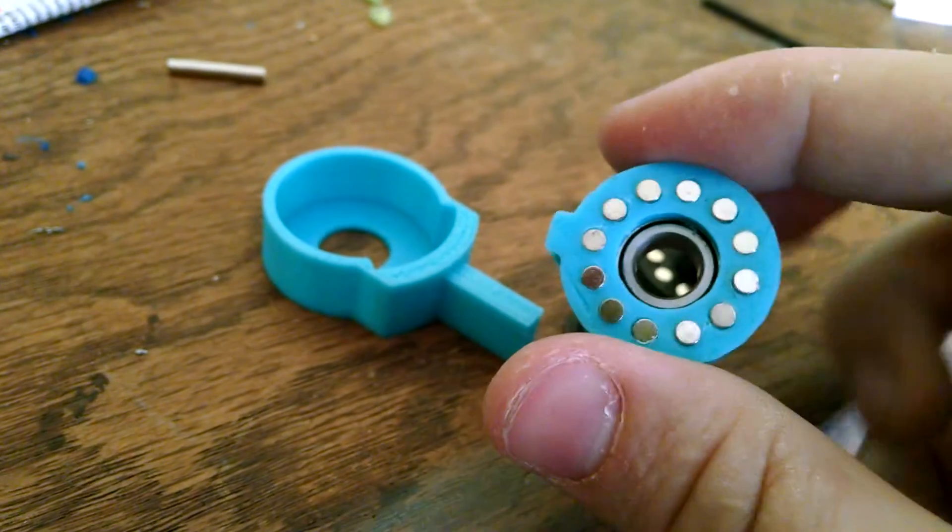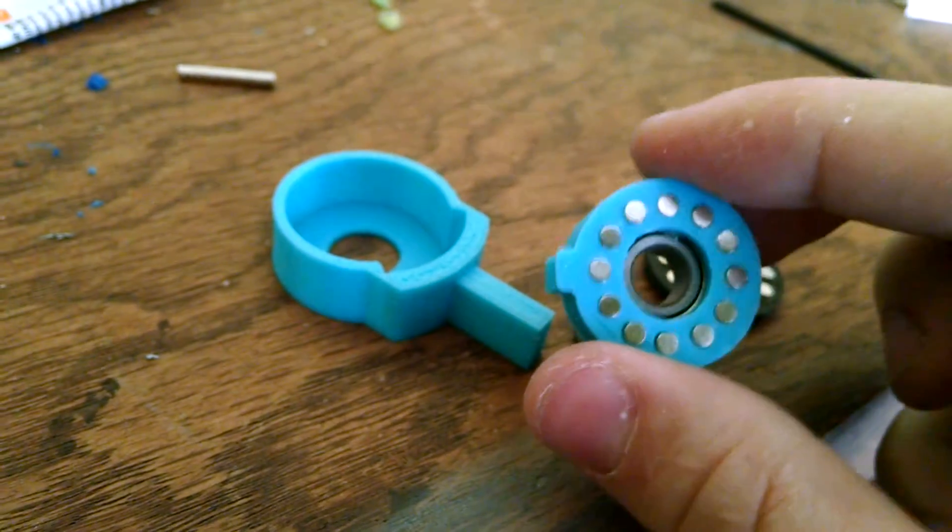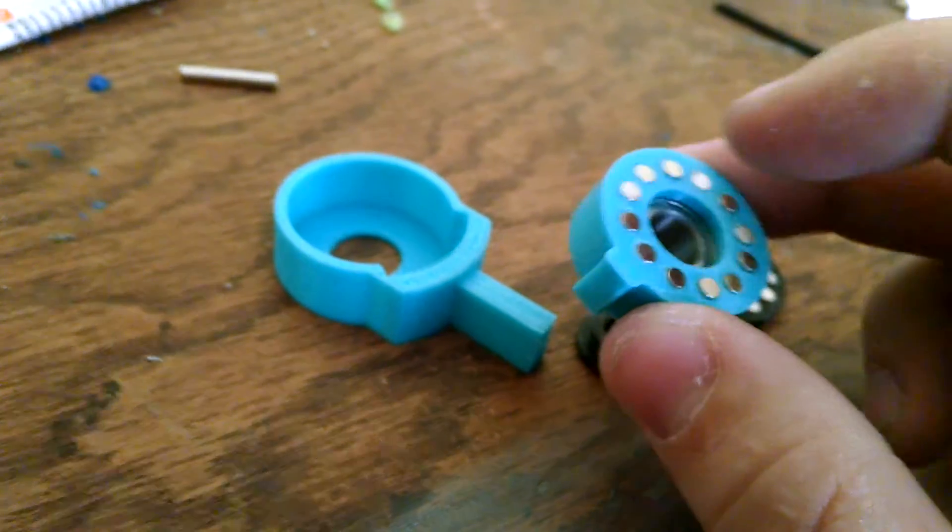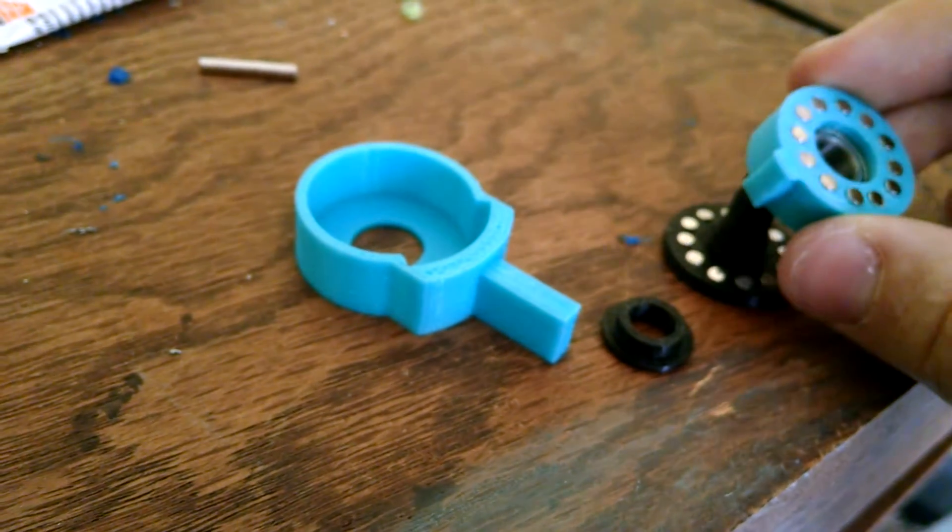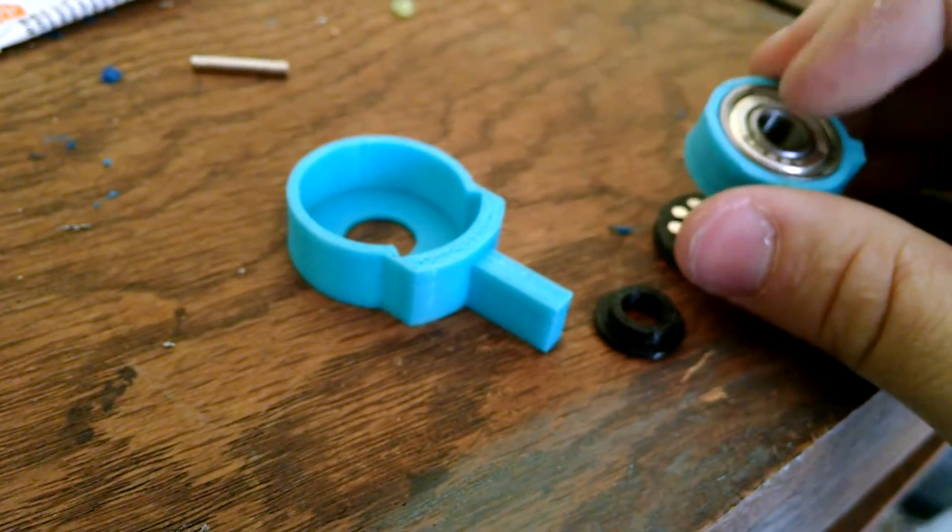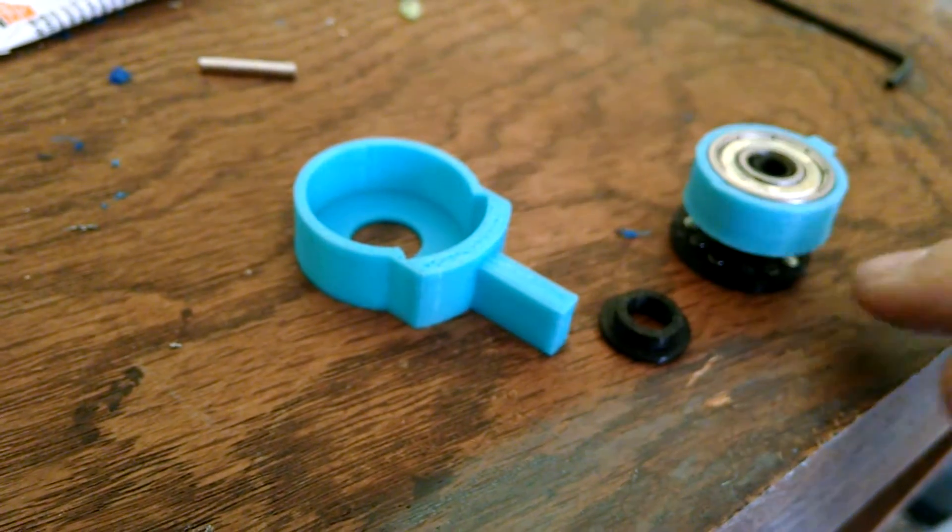So here's one part. These are all magnets right here. They're all embedded, and then it has a bearing in there like that. And that goes on the other little wheel,